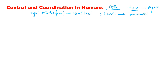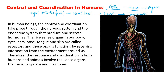To perform all these activities efficiently, they need control and coordination. In animals, including humans, the chemicals produced by endocrine glands as well as the nervous system perform these actions. In human beings, control and coordination takes place through the nervous system and the endocrine system. The nervous system consists of nerve cells and nerve fibers, whereas the endocrine system produces and secretes hormones.